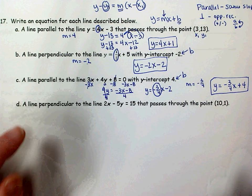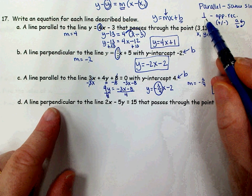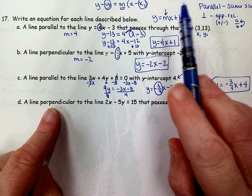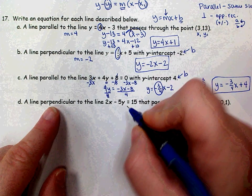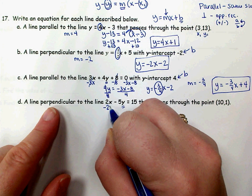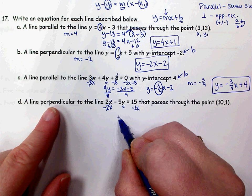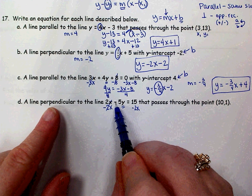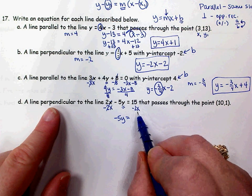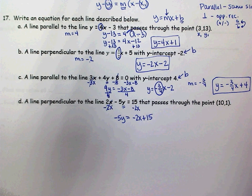On part D, I want a line perpendicular to this line going through the point (10, 1). Perpendicular lines have opposite reciprocal slopes, so I need the slope of this equation. It's not the number in front of x unless it's in slope-intercept form, which ours is not. I'll begin by subtracting 2x from both sides. Be careful — it's not just 5y left on the left side, it's negative 5y. That sign goes with that term. On the right side I have negative 2x plus 15.